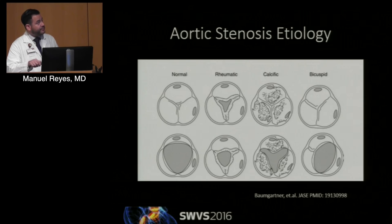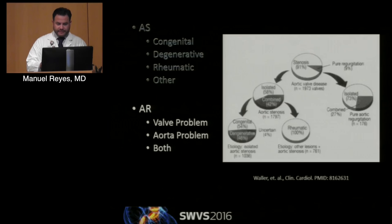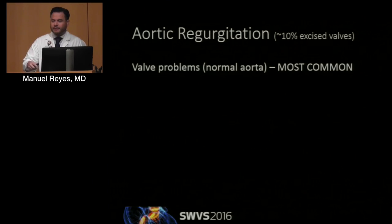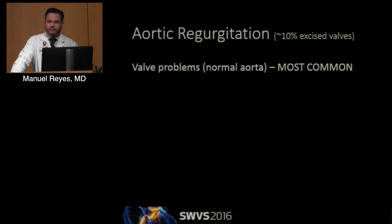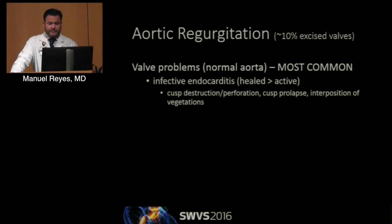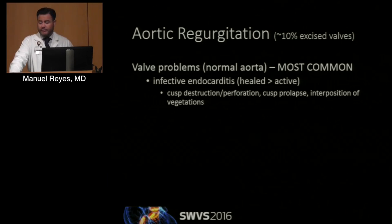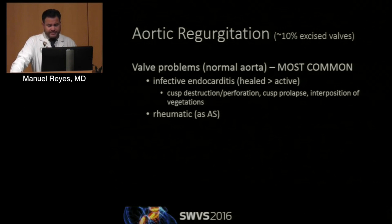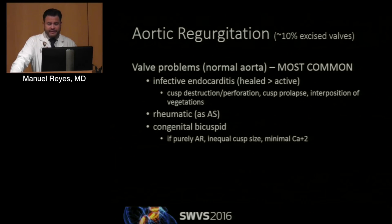To summarize, with rheumatic features, calcium is more at the tips of the cusps, as opposed to calcific or degenerative where it involves mounds inside the cusps. Both can lead to regurgitation. Now for aortic regurgitation, I classify these in two groups: one, it's a valve problem; two, an aortic problem; and three, a combination of both. The most common cases are infective endocarditis, either active or healed — where the cusps are destroyed by bacterial invasion, can prolapse, or vegetation prevents the cusps from coaptating. Rheumatic, and congenital bicuspid — though purely regurgitant bicuspid is actually related to unequal cusp size, with minimal calcium.